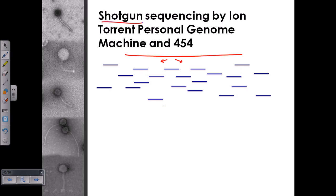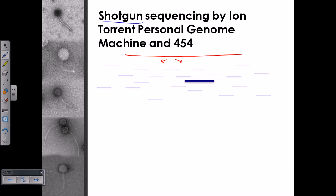Once we have these smaller fragments — shown here in blue — the second task is sequencing each of those fragments. Then we analyze those sequences for overlapping regions and ultimately reconstruct the full sequence of the human genome.